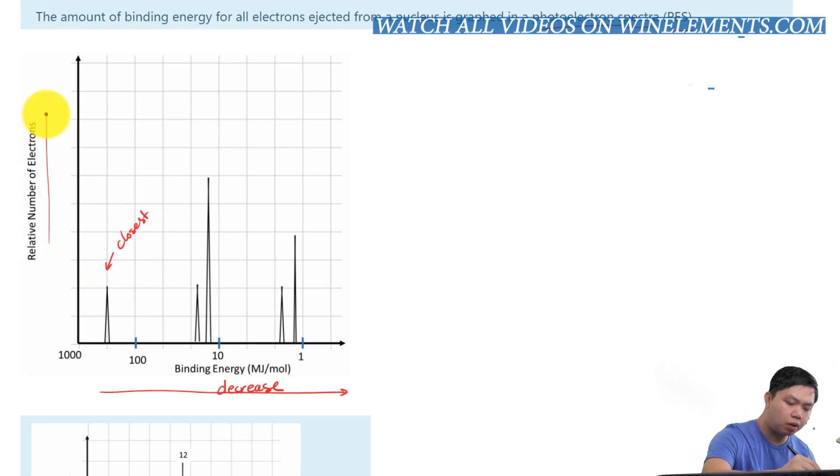And here we have the relative number of electrons. Because, if you notice, the word relative is relative between peaks. So, if you look at this peak right here, this is about one-third of this whole entire peak. As you can see right here, this is one-third, this is one-third.